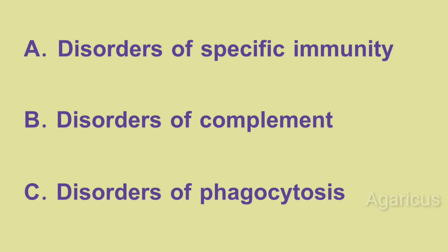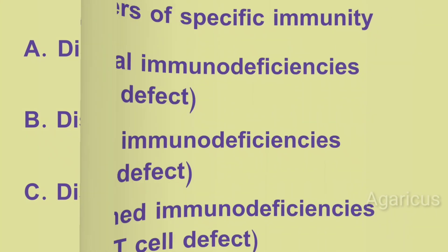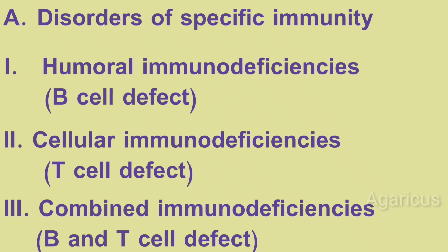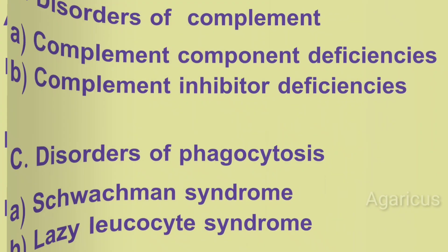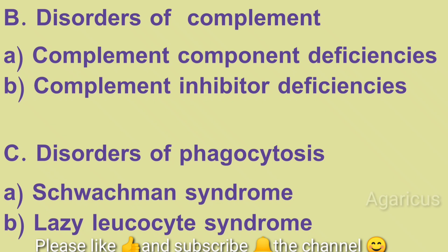Primary immunodeficiencies include disorders of specific immunity, disorders of complement, and disorders of phagocytosis. Under specific immunity: humoral immunodeficiencies involve defective B-cells; cellular immunodeficiencies involve defective T-cells. Complement system disorders include complement component deficiency and complement inhibitor deficiency. Phagocytosis disorders include Schwachman Syndrome and Lazy Leukocyte Syndrome.